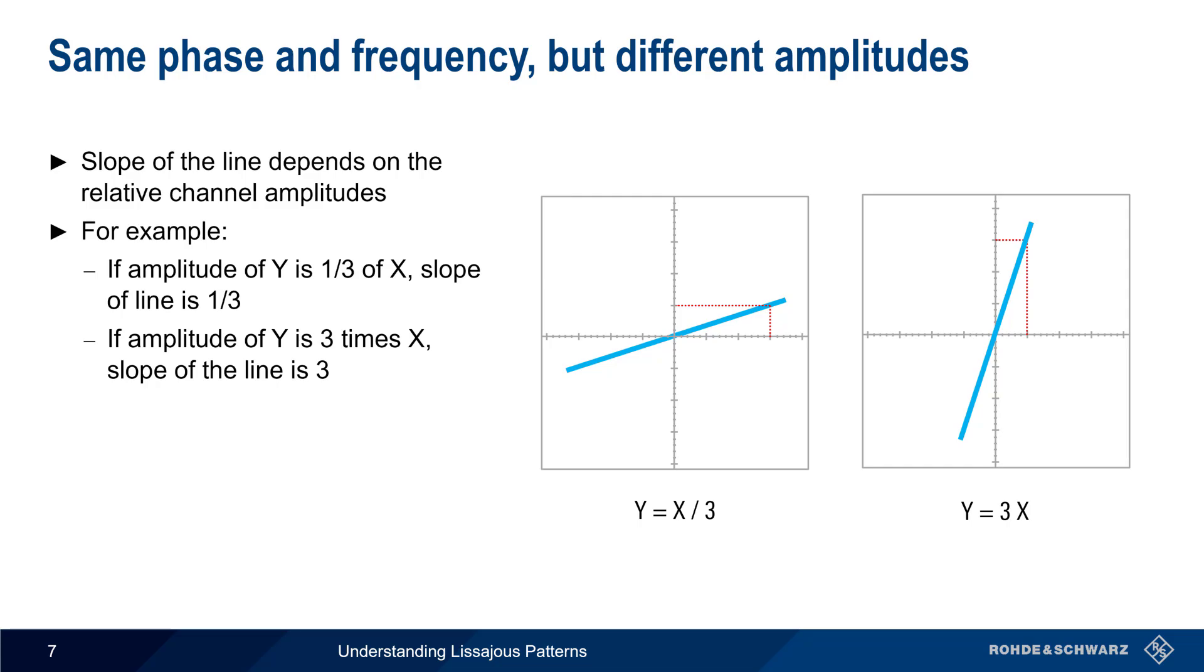Note that a similar effect would be seen if the channel amplitudes were equal, but the volts per division settings were different. In the remainder of this presentation, all of our examples will assume that both X and Y have equal amplitudes with no offset, that both waveforms are centered around 0 volts, and that both channels have the same volts per division setting.